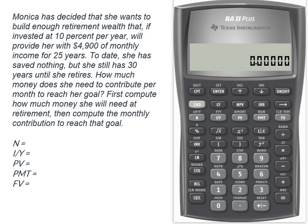We have Monica who is going to be able to invest her money at 10% a year. What she wants is that when she retires, she wants to be able to get $4,900 a month. She wants to be able to get that monthly income for 25 years. Currently, she's saved nothing, but she has 30 years until she retires. Our ultimate goal is to tell her how much money she needs to put into her retirement account every month for the next 30 years, so that when she retires she'll be able to draw out that $4,900 a month income.